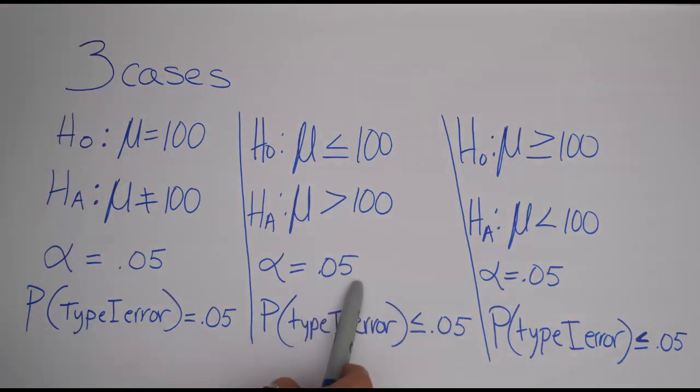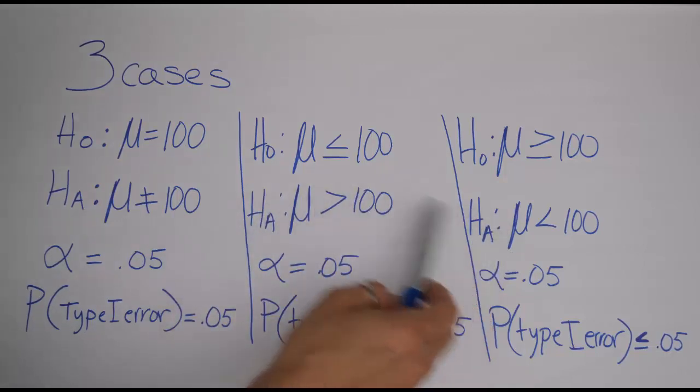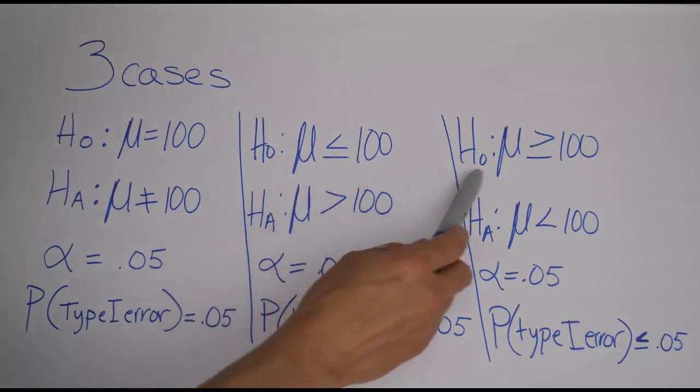So what we're saying here is that the chance we commit a type 1 error in these two cases is going to be less than or equal to 5%. It won't be equal to 5%. It could be as high as 5% but it's often less than that depending on what's true in the real world.